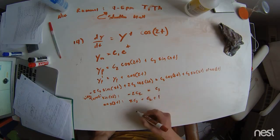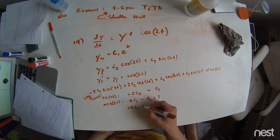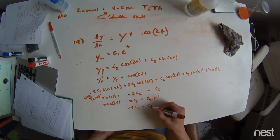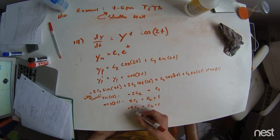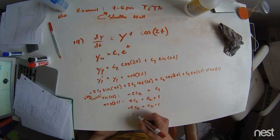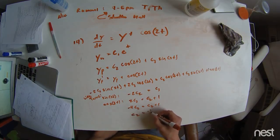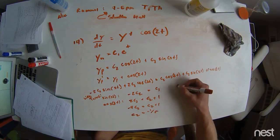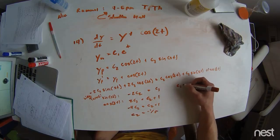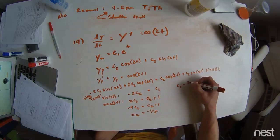We substitute this in. We see that negative 2c2 equals c3, so we can have negative 4c2 equals c2 plus 1, and we get c2 equals negative one fifth. We substitute this back in and we see that c3 equals 2 fifths.